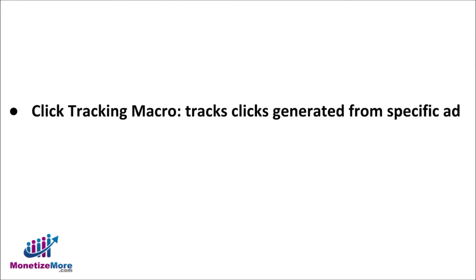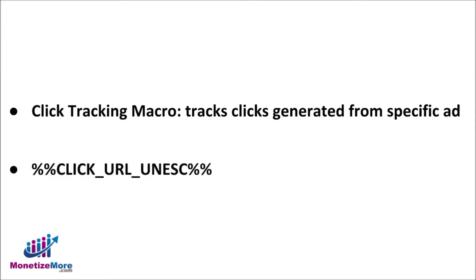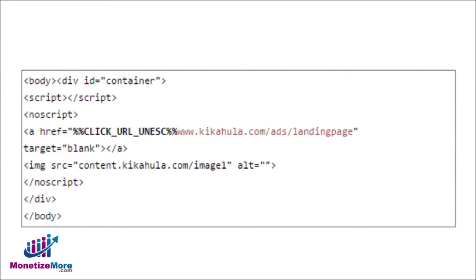The first macro option is the Click Tracking Macro. Just as the name suggests, it tracks clicks generated from a specific ad. To embed this macro, you need to add a very simple snippet of code within the creative tag. You will want to add the Click Macro code right after and before the landing page URL.